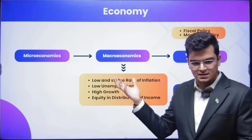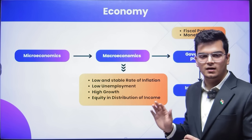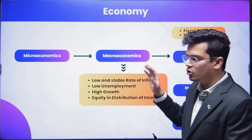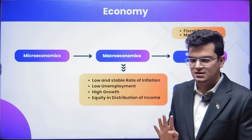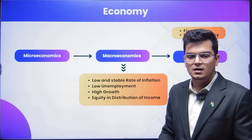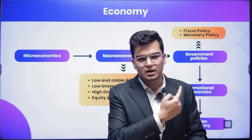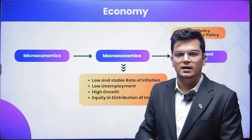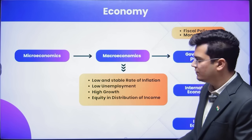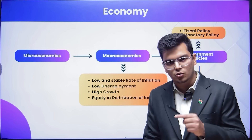My approach to economy follows a logical format. We start with microeconomics to understand how graphs work. Then we go to macroeconomics and study the four key macroeconomic objectives: low and stable rate of inflation, low unemployment, high growth, and equity in distribution of income. To achieve these four goals the government has two tools: fiscal policy and monetary policy. After we study the four objectives, we study these two tools. Linked to these is the topic of banking and capital markets. Once done with that, we move to international economics, and finally Indian economy — sectors of the Indian economy including agriculture.